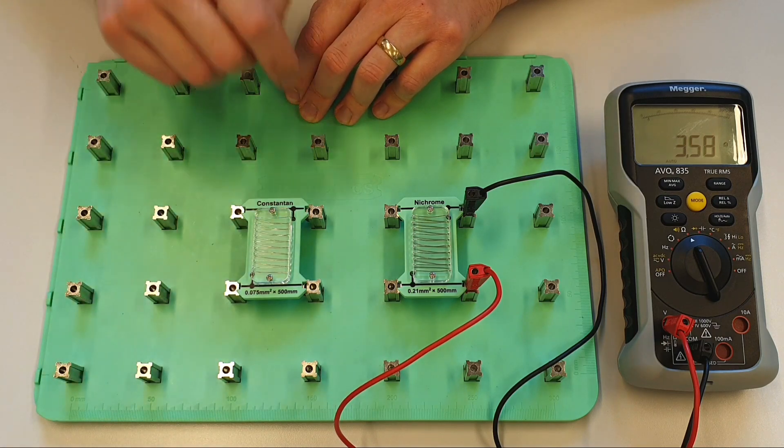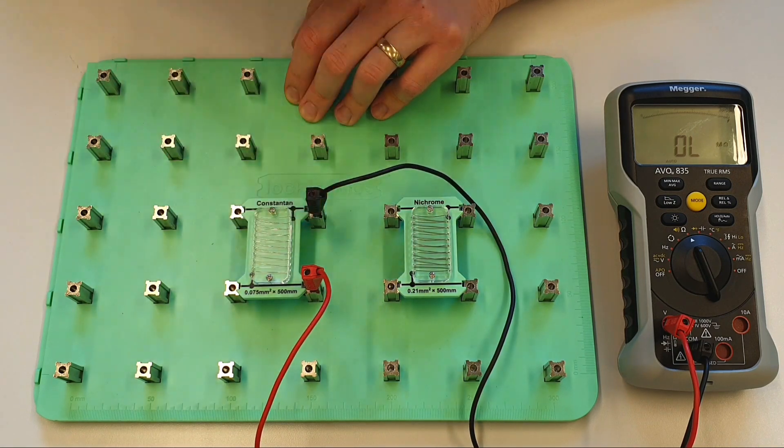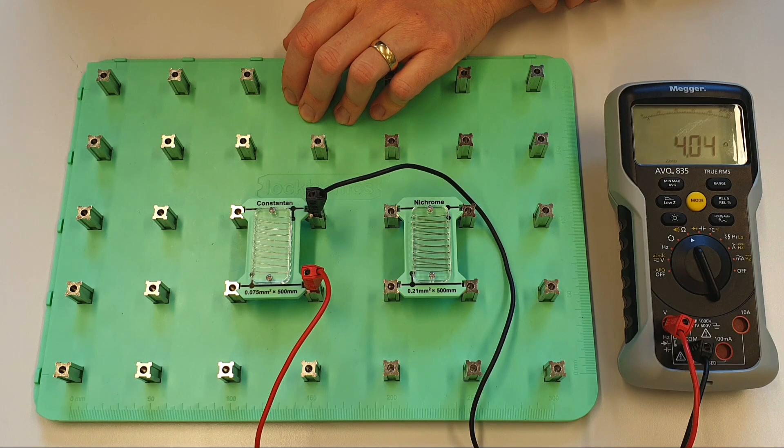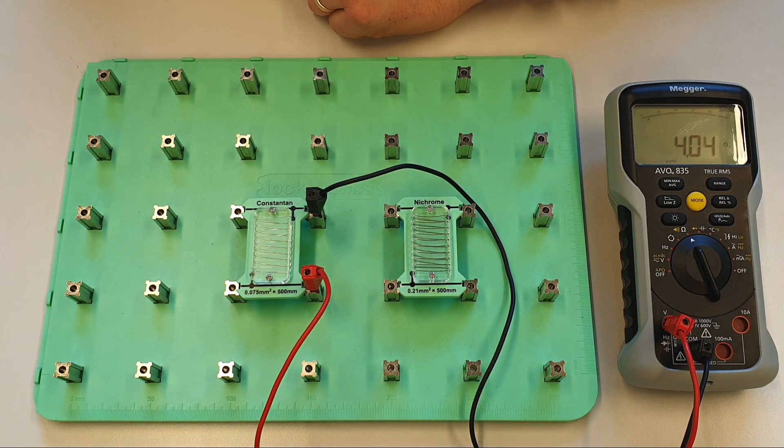So let's take the resistance of the Constantan and see what we get. So we'll plug this in over here and see what the resistance is on our meter, and you can see there on our AVO835 we're coming out with a value of 4.03 ohms. So that's the value that we're going to use in calculating what the resistivity of our Constantan is. So now let's go over and do the calculation.